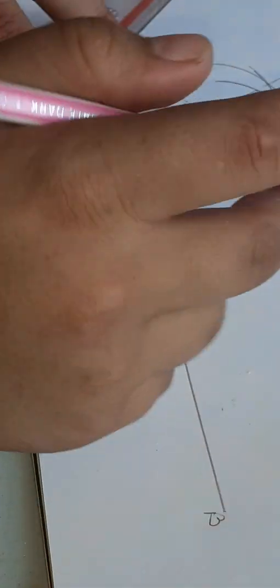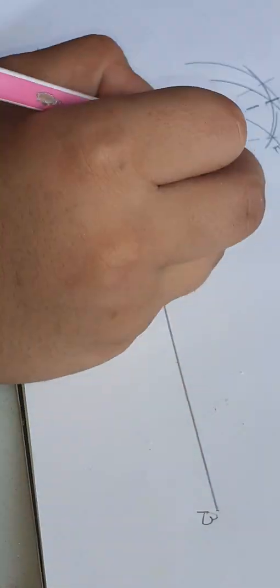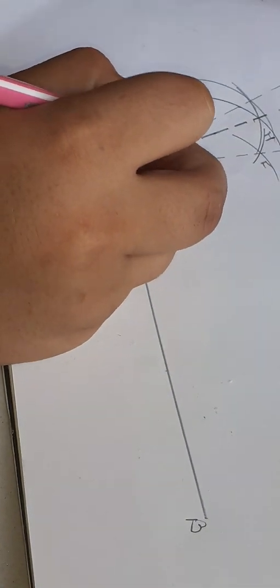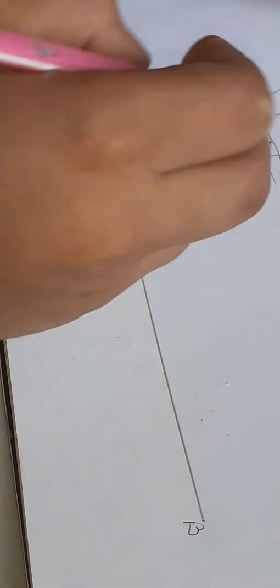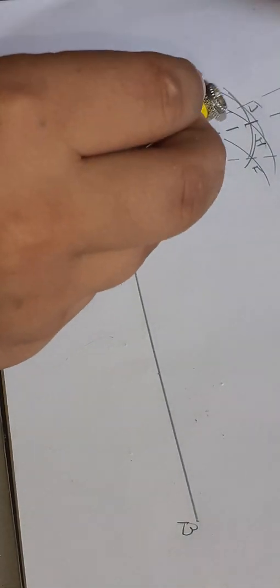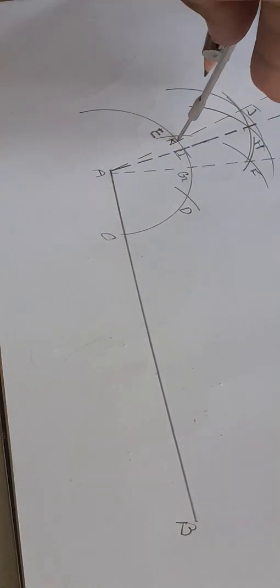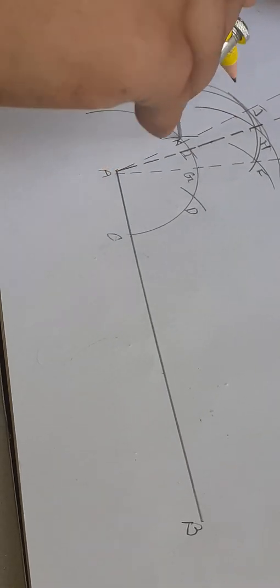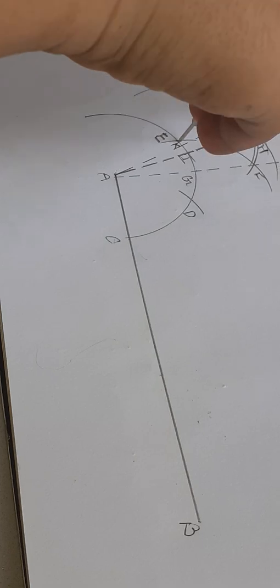You have to name all the arcs. Put your compass needle at E and cut an arc here.